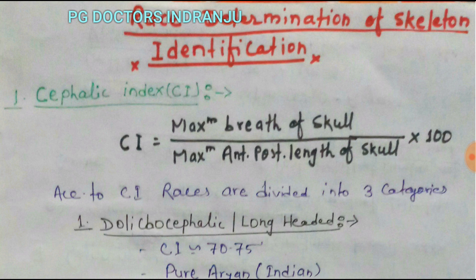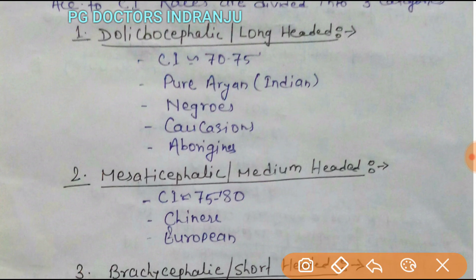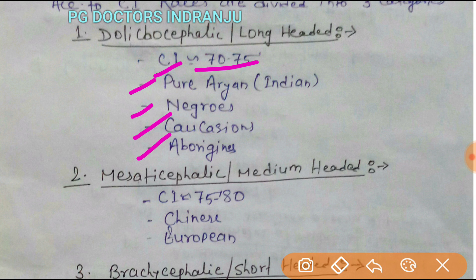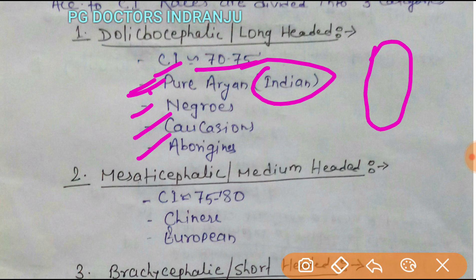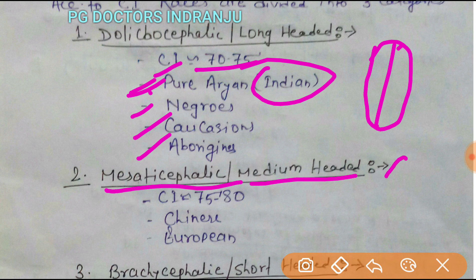According to the cephalic index, races are divided into three categories. The first is Dolichocephalic, meaning long-headed. The cephalic index approaches 70 to 75 percent. It is found in pure Aryans, Negroes, Caucasians, and Aboriginals. The Aryan group includes Indian people, so Indian people are Dolichocephalic or long-headed — meaning the head is longer in shape.